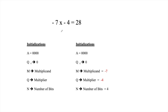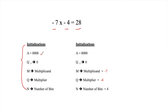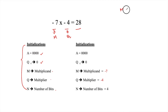The example we have is minus 7 and minus 4, which should result in positive 28. The initialization is: A equals 0, Q minus 1 equals 0. M is loaded with the multiplicand minus 7, and Q with the multiplier minus 4. Since these are signed numbers, it is essential to find 2's complement values. M equals minus 7, so we need to find minus M, which will simply be 7.